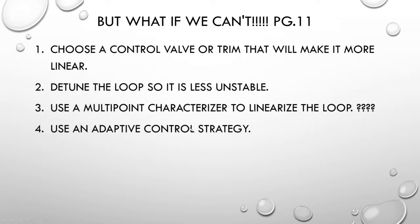If we can't stay in the same set point area, we have to do something. There are a few things we can do. First, we can choose a control valve or trim for that valve that will make it more linear, or at least opposite to the process non-linearities to straighten it out. The second option is to detune the loop so it is less unstable in operating ranges we're not normally in. If we're one day at 50% set point, another at 80%, another at 30%, that poses a problem — so we'll have to do something called detuning.